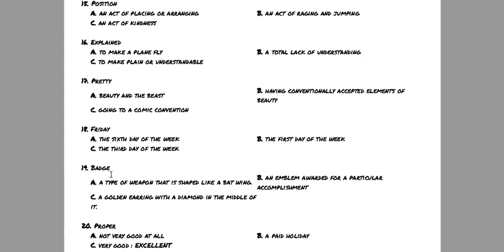Nineteen, the word is badge. Is badge A, a type of weapon that is shaped like a batwing? Is it B, an emblem awarded for a particular accomplishment? Or C, a golden earring with a diamond in the middle of it?